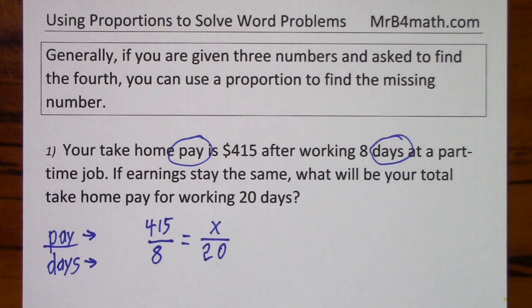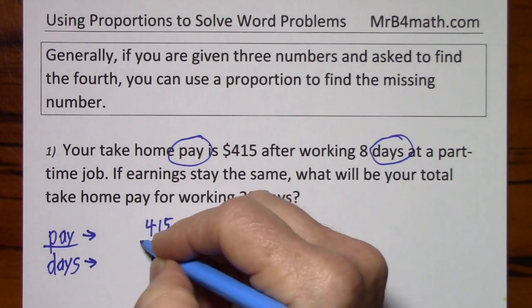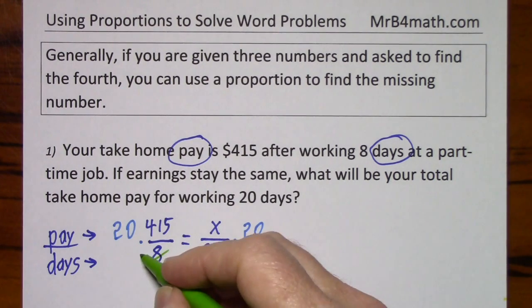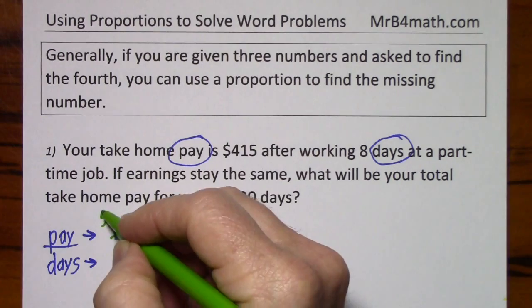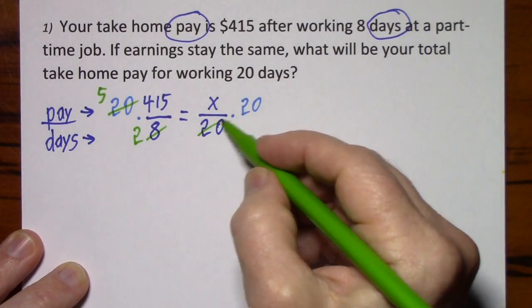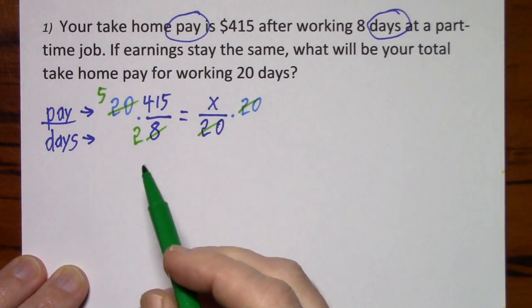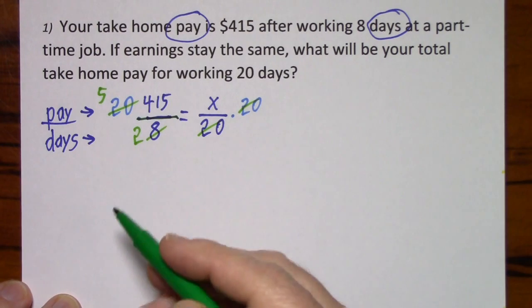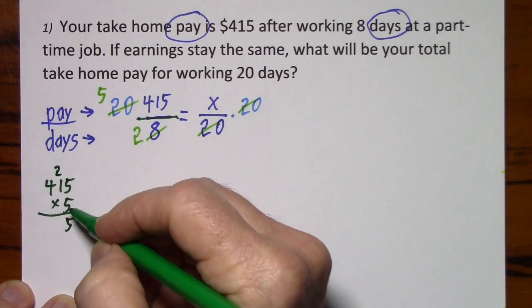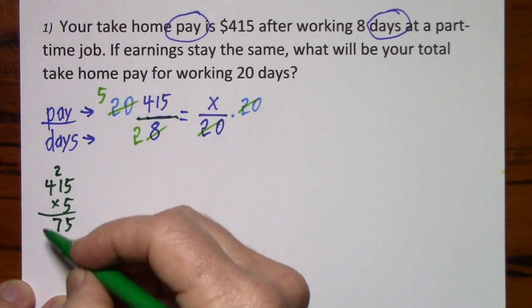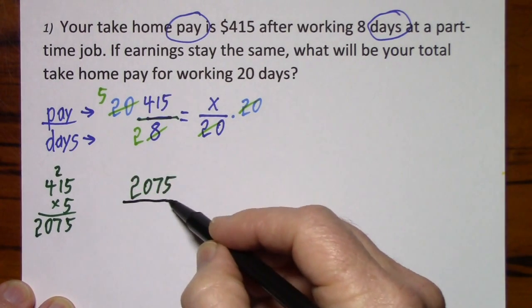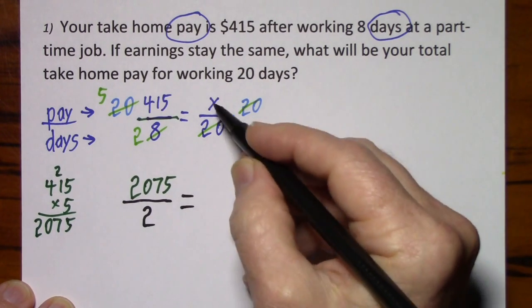Now we just solve for x. I want x by itself, get rid of the 20. We have a common factor of 4, divide by 4. Of course on this side they cleaned up, 20 goes into 20 once. So now we have 5 times 415 divided by 2. So 2075 is our numerator, we have 2 in the denominator, and over here we just have x.